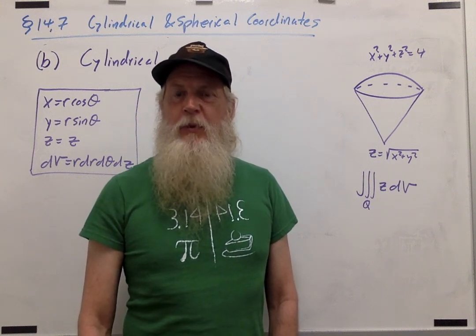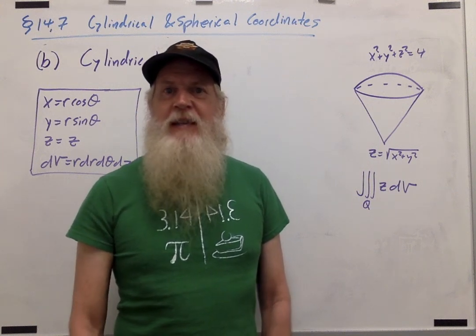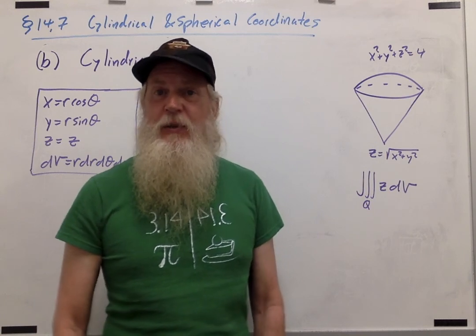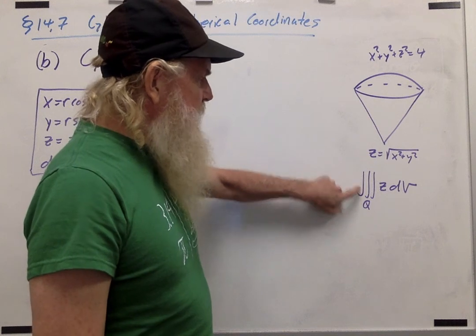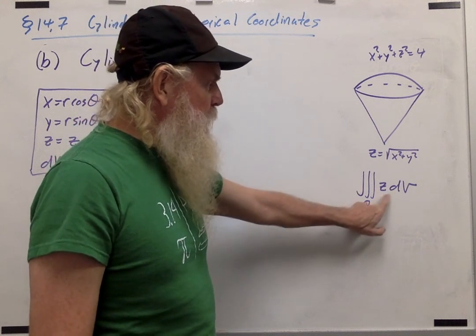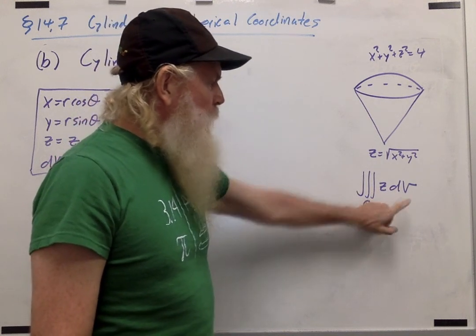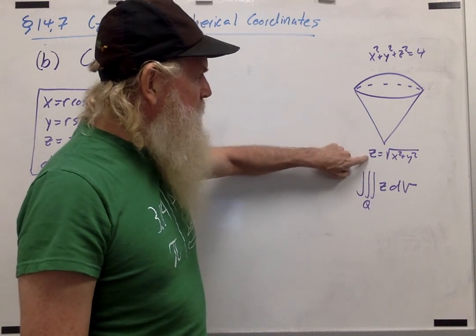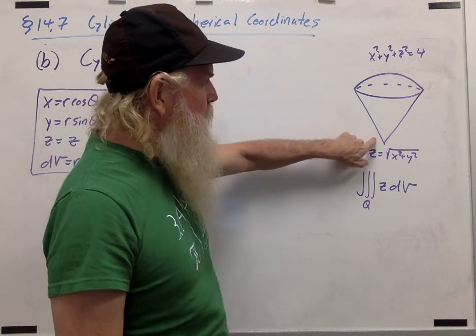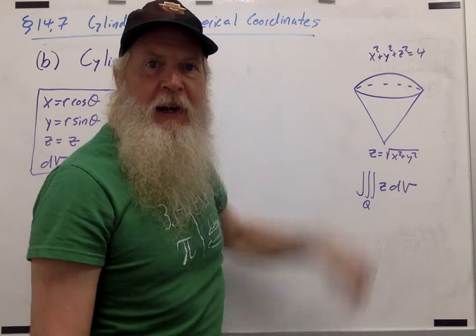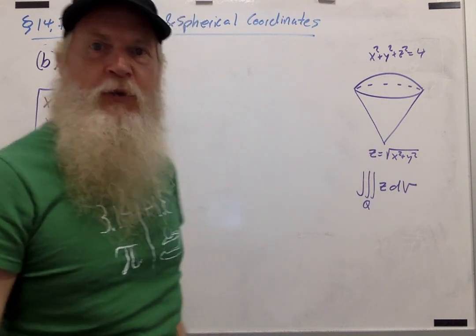Let's continue the example from the previous video by setting up the integral in cylindrical coordinates. Recall that the integral we're trying to set up is the triple integral over Q of z dV, where Q is the solid bounded below by z equals the square root of x squared plus y squared, which is a cone, and above by x squared plus y squared plus z squared equals 4, a sphere.